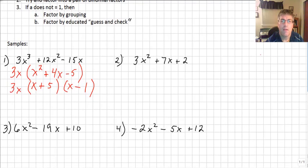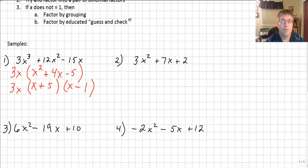Sample number 2: 3x² + 7x + 2. This particular problem has no greatest common factor. When we have a pair of binomial factors, we have position 1, position 2, position 3, and position 4. We multiply the first position times the third to get our x² term, and we multiply the second position times the fourth to get our constant.